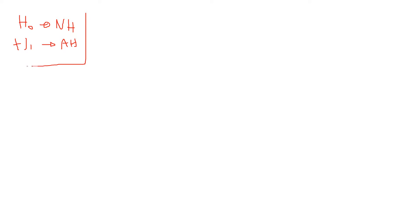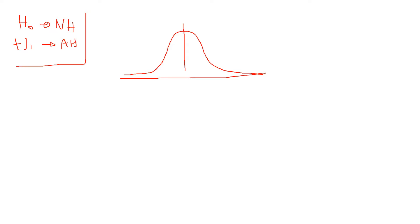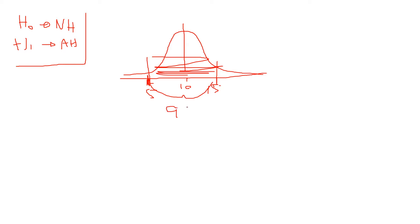Let's first understand what statistical significance means. Imagine we have a population with an average of 10. The points at 15 and 5 represent two standard deviations. Anything between these two points encompasses 95% of the data.